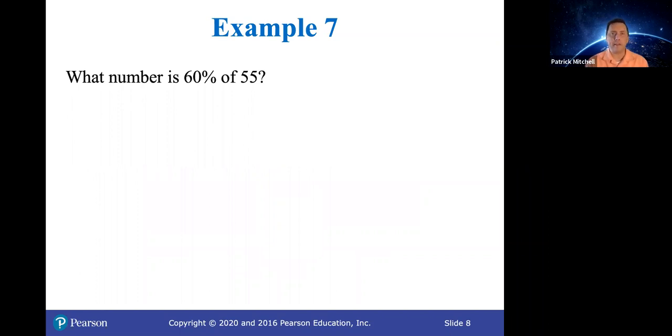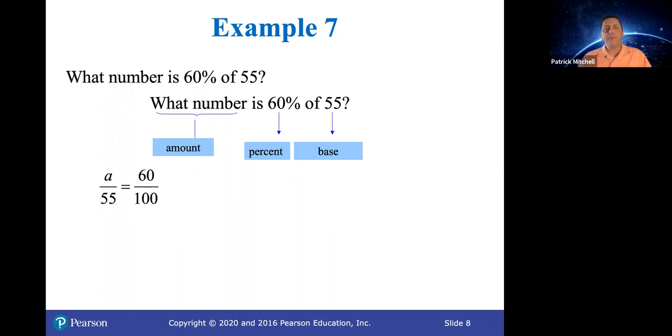Now we're actually going to start solving these things. What number is 60% of 55? What number is the amount. 60 is the percent. 55 is the base. It comes after the word of. So there's our proportion, which we are now going to solve. So we have a over 55 equals 60 over 100. Now they have simplified the fraction 60 over 100. You don't technically have to do that at this point. And now what they've done here is they have cross multiplied. Remember the easiest way to solve a proportion, which is an equation that says one fraction equals another fraction, is to cross multiply.